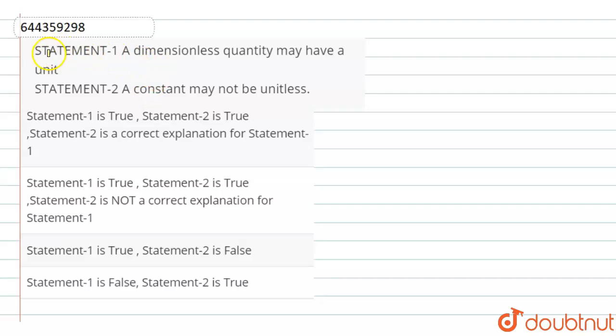Hello dear students, here statement one is a dimensionless quantity may have a unit, and statement number two is a constant may not be unitless.